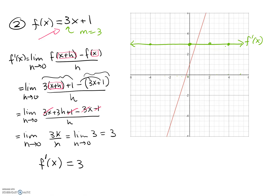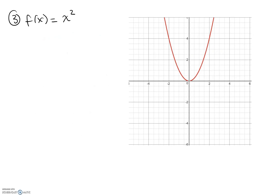Now let's look at a quadratic function. We're looking at the basic problem f of x equals x squared. If we were to guess the slopes throughout the entire curve, things are changing because it's not a constant slope. For example, when I'm at 0, notice the tangent line is horizontal, so we would expect the slope to be 0 at the origin.